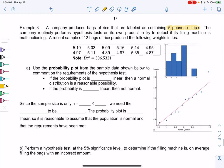Doesn't mean it's actually five pounds, but they say there's five pounds. The company routinely performs hypothesis tests on its own product to try to detect if its filling machine is malfunctioning. So malfunctioning would be more or less than five pounds.